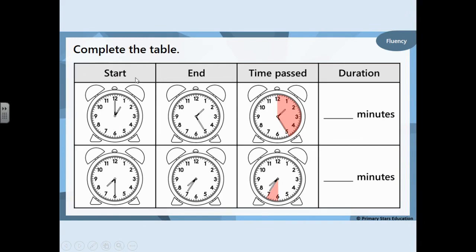Let's look at this table. The start time is 1 o'clock and the end time is 25 minutes past 1. The red shading shows us how much time has passed from start to end. Duration means how long that event was — from start to finish. Let's count together: 5, 10, 15, 20, 25 minutes. So it took 25 minutes from start to finish.